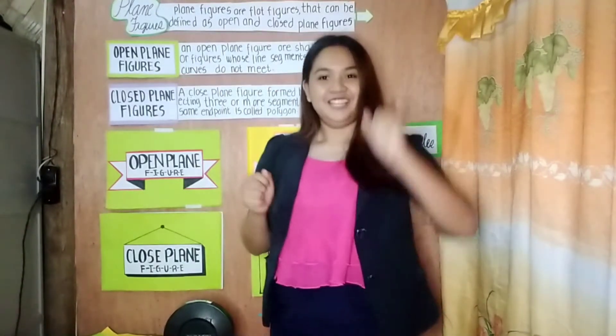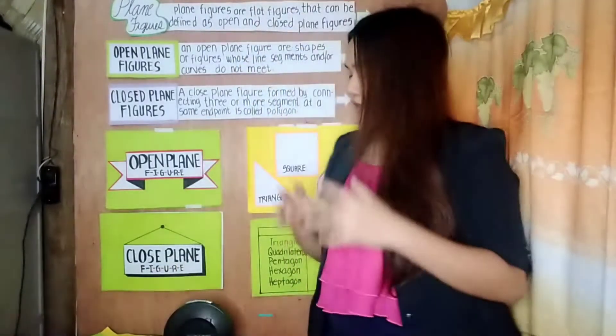Mr. Recio. Very good. A triangle is a polygon with three sides. So, based on our activity, did you find some idea or do you have any ideas about our topic for today?